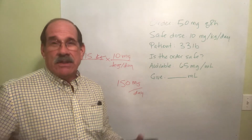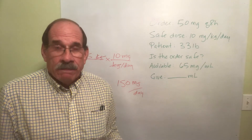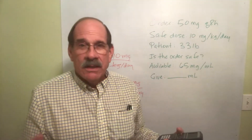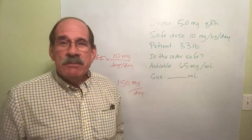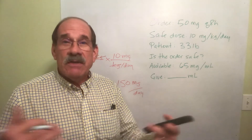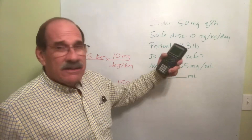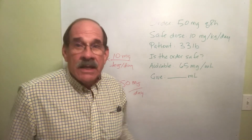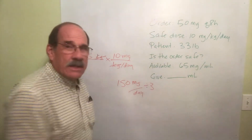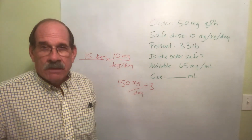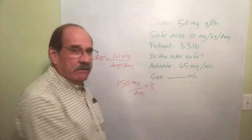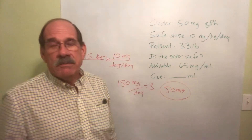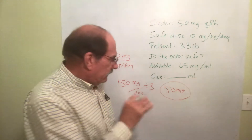But I don't need the daily total — I need to know how much is safe each time I give the medication. The order says Q8H, which means every 8 hours. A common mistake: don't divide by 8. Since there are 24 hours in a day, Q8H means the medication is given 3 times a day. So divide 150 by 3 — each dose is 50 milligrams.